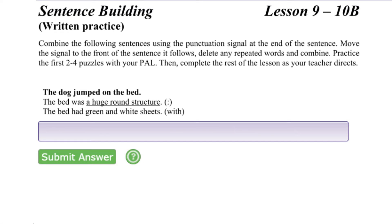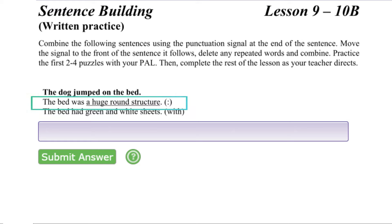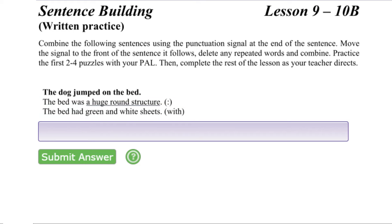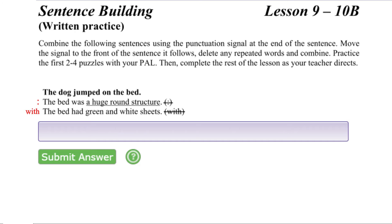Begin by reading the sentences in the sentence building puzzle separately. The base sentence: The dog jumped on the bed. The bed was a huge round structure. And the bed had green and white sheets. The signals for combining these sentences are in parentheses. Begin by moving the signals in parentheses in front of the sentence they follow. Next, join the underlined adjective phrase from the first signal sentence with the base sentence. Finally, delete any repeated words and replace them with the pronoun if necessary. In this puzzle, delete 'the bed had' from the second signal sentence.